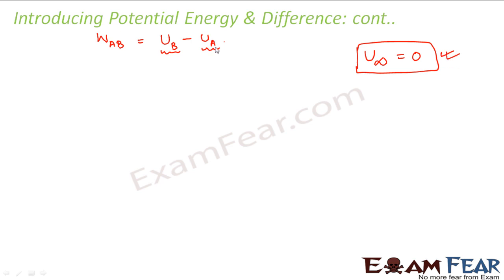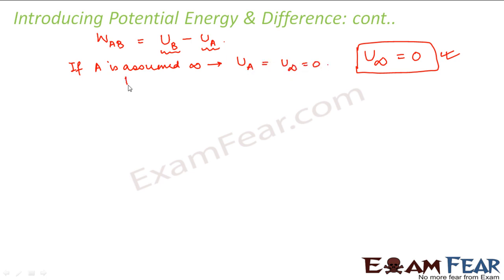So if point A is assumed to be at infinity, then U_A equals U_infinity which is zero. In that case, your work done will be equal to the potential energy at point B. So this work done becomes equal to U_B minus U_infinity, which becomes U_B.